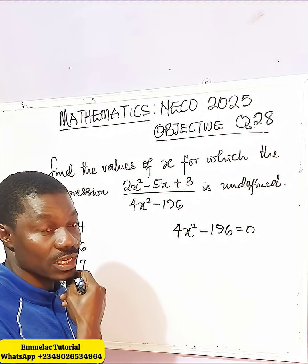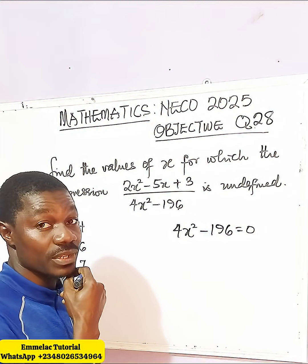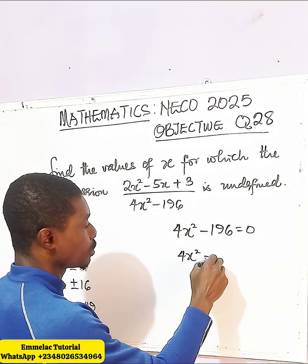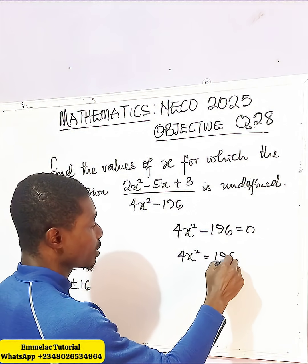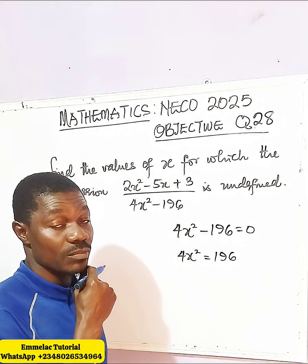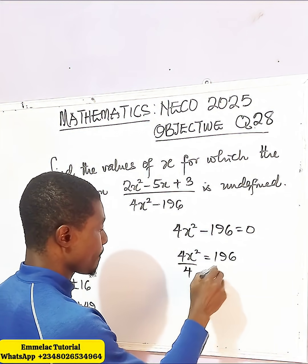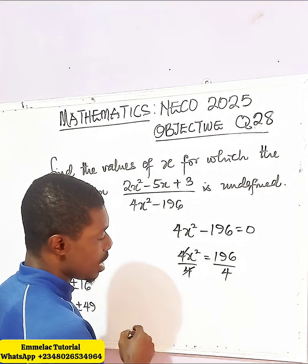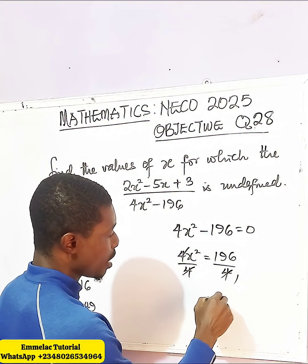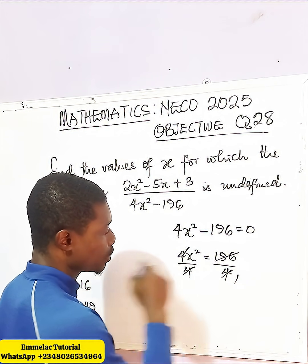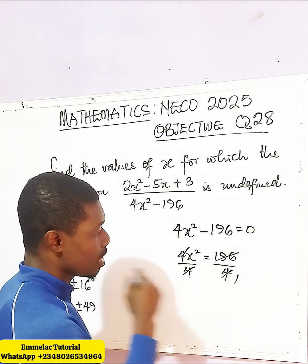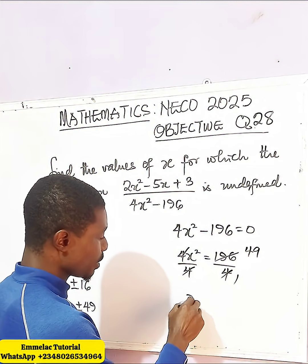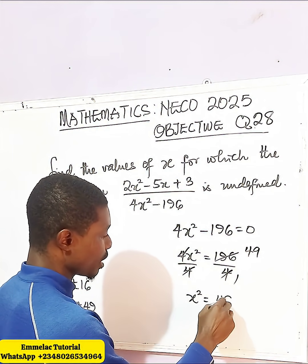So what we just need to do here is add 196 to both sides. We are left with 4x squared equals 196. Now let's divide both sides by 4. That should be 49, so we are left with x squared equals 49.